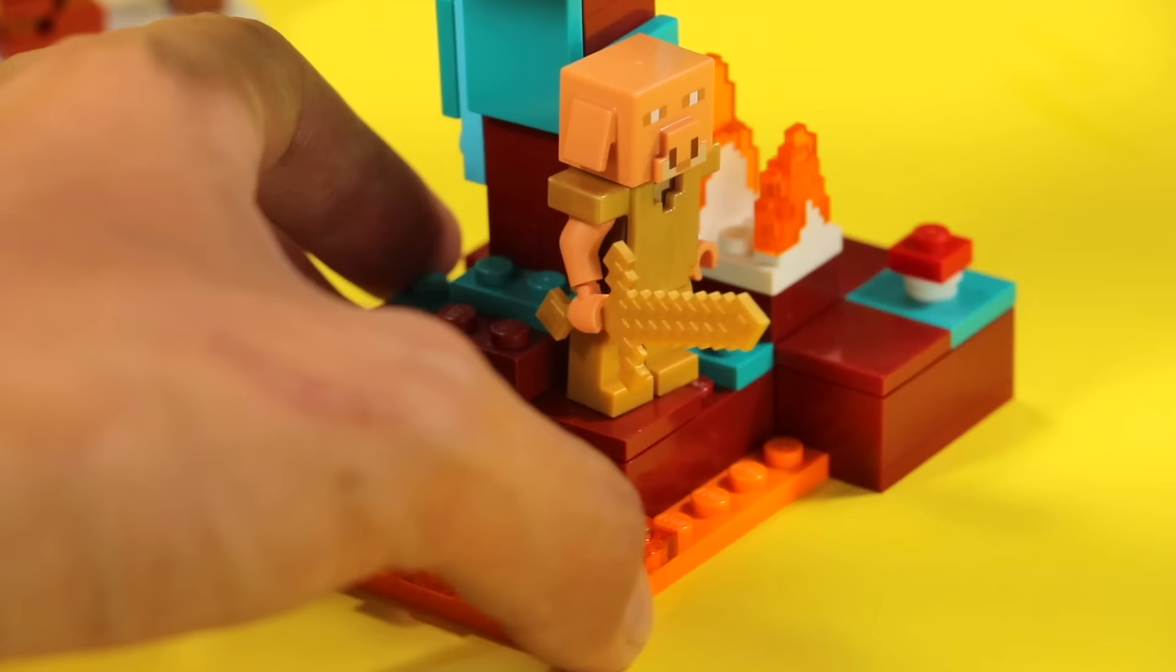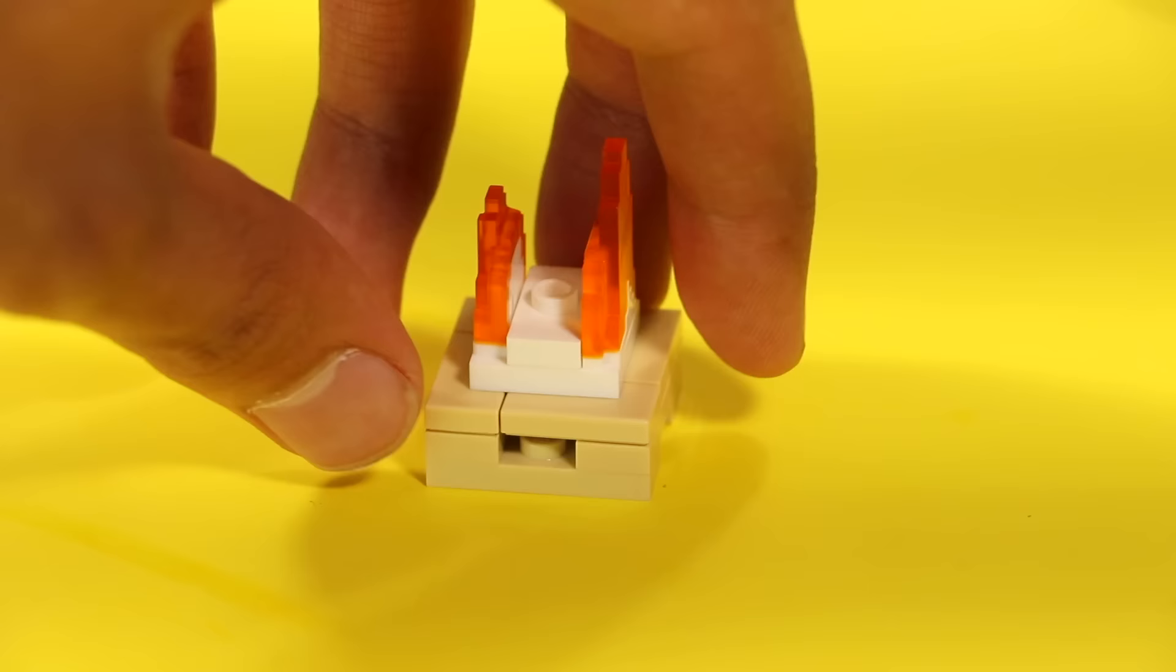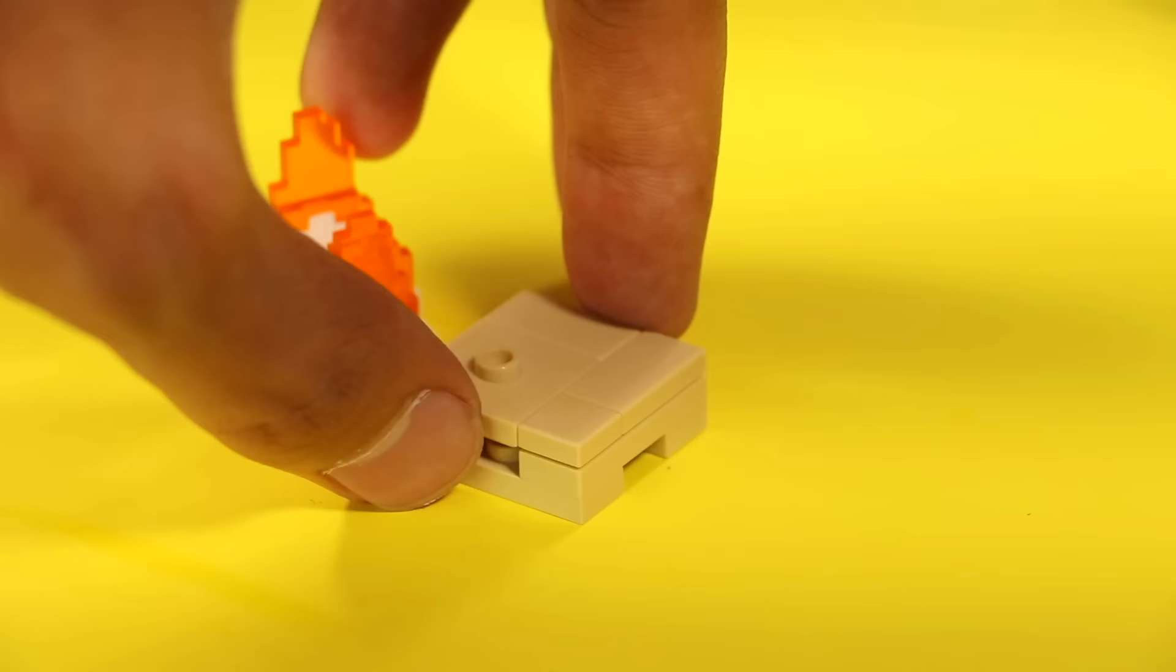For this next design, here is a simple campfire. I just crisscrossed some 1x3 plates, and then on the very top I laid down this Minecraft piece that comes in the sets - it's just some simple fire.